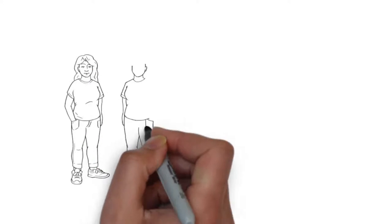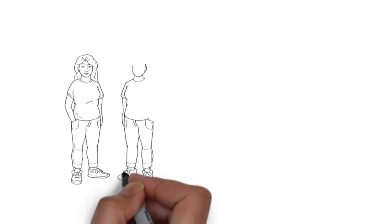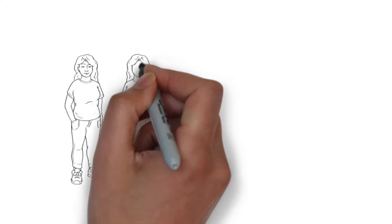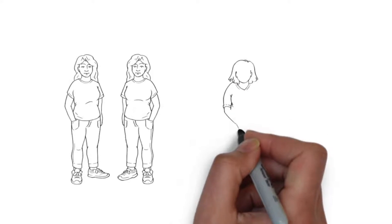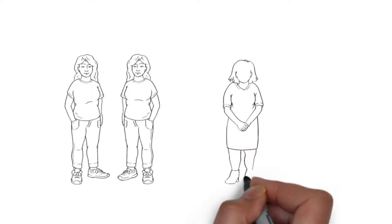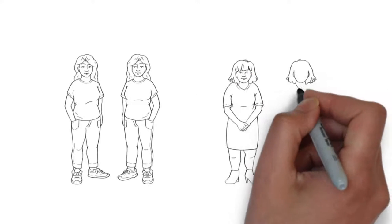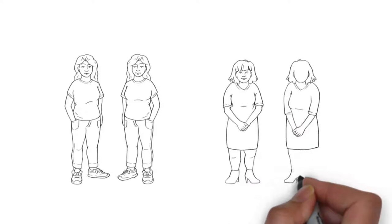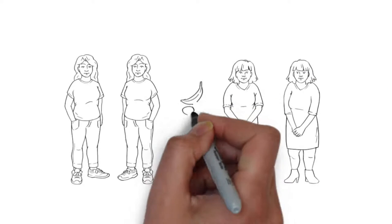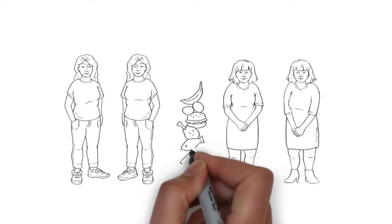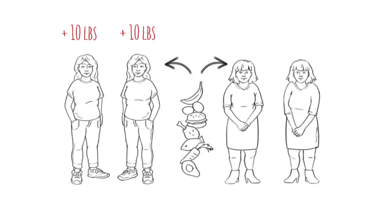Since identical twins have the exact same genes, scientists took pairs of twins and placed them in a metabolic lab, almost like a scientific jail, and controlled everything they did, including when and how much they ate. It turns out that when scientists fed twins more than they needed, twins in the same pair gained the same amount of weight at the same time. But between different twin pairs, different amounts were gained.